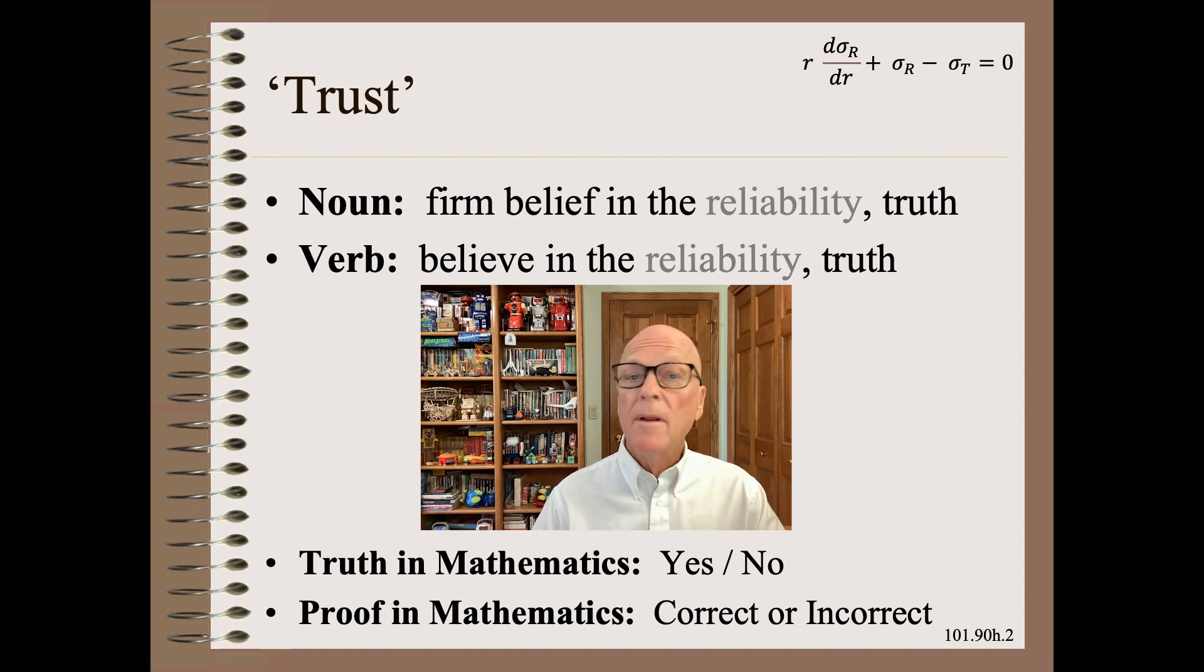Let's begin with truth, the simpler of the two. In mathematics, a proposition is binary, either always true or always false. Or alternatively, always correct or always incorrect.